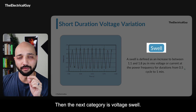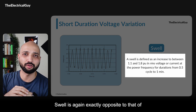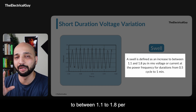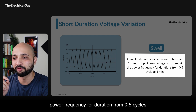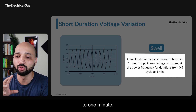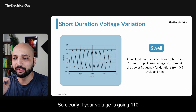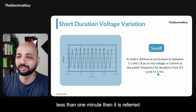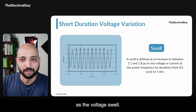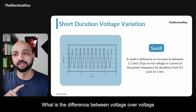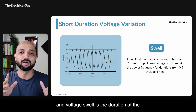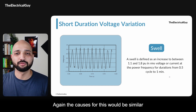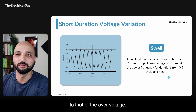The next category is voltage swell, exactly opposite to voltage sag. A swell is defined as an increase to between 1.1 and 1.8 per unit in RMS voltage or current at power frequency for a duration from 0.5 cycles to one minute. If your voltage goes 110 to 180 percent for a duration less than one minute, it is referred to as voltage swell. The difference between over voltage and voltage swell is the duration the voltage remains in the system — swell is there for less than one minute. Causes are similar to those of over voltage.